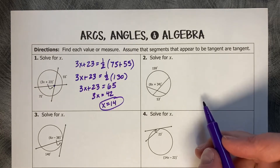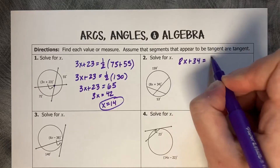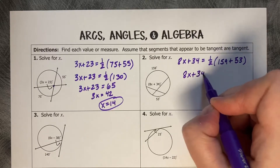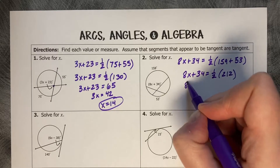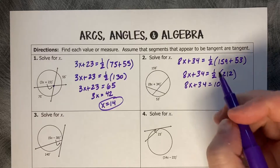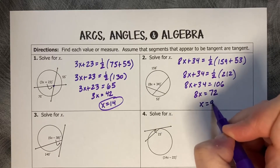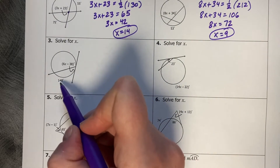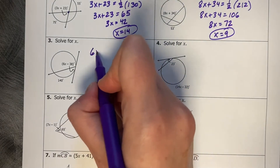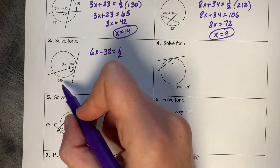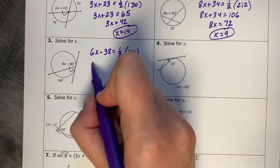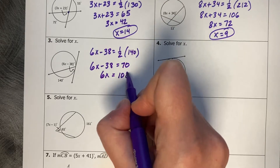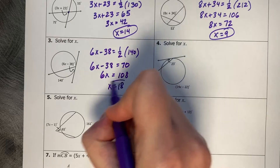You try number two. These two are tangent. Tangent corresponds to half of its corresponding arc. So this angle measure, 6x minus 38, equals half of its corresponding arc, which is 140. So 6x minus 38 equals 70. 6x equals 108 — add 38, divide by 6 — and x equals 18.